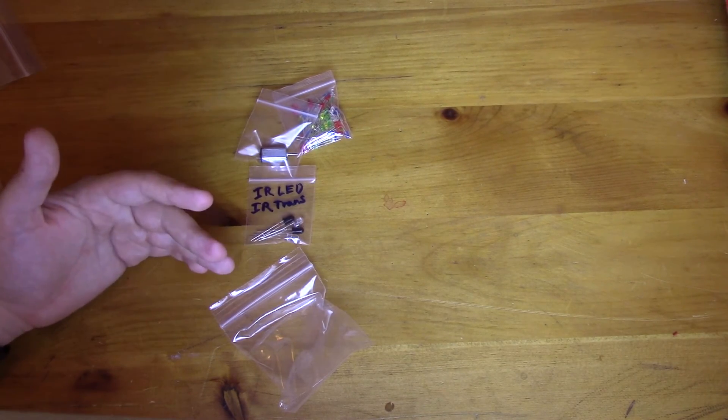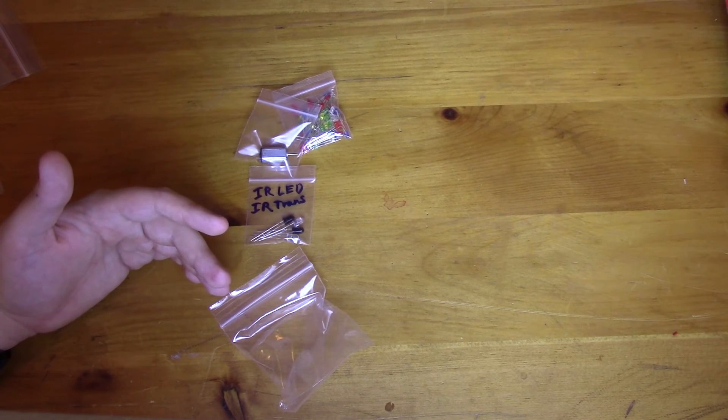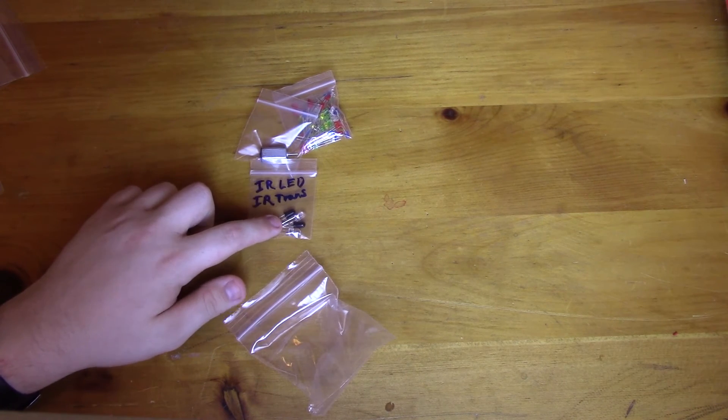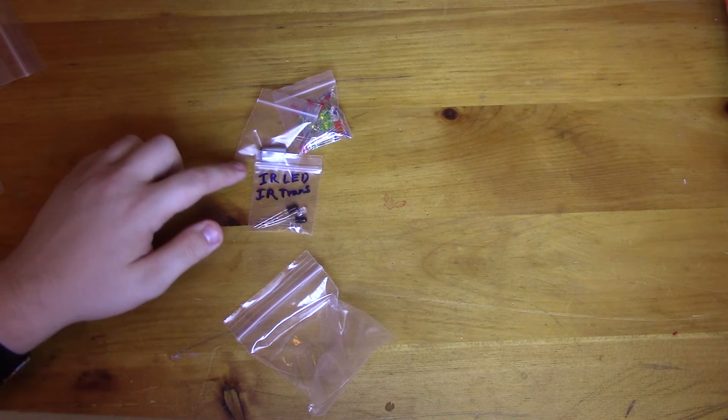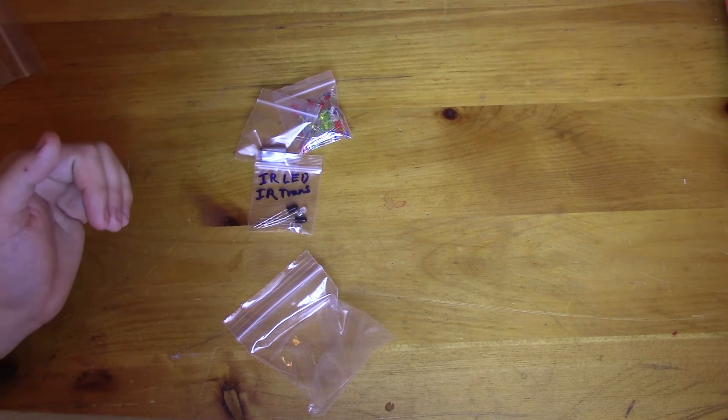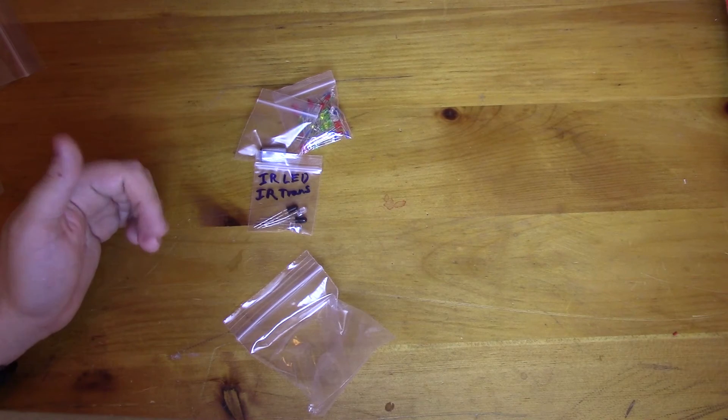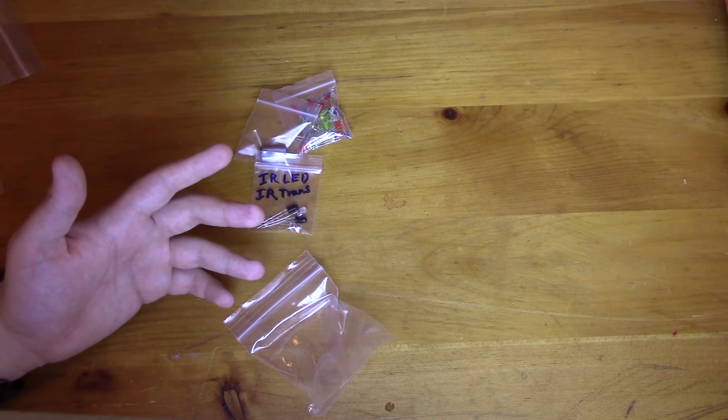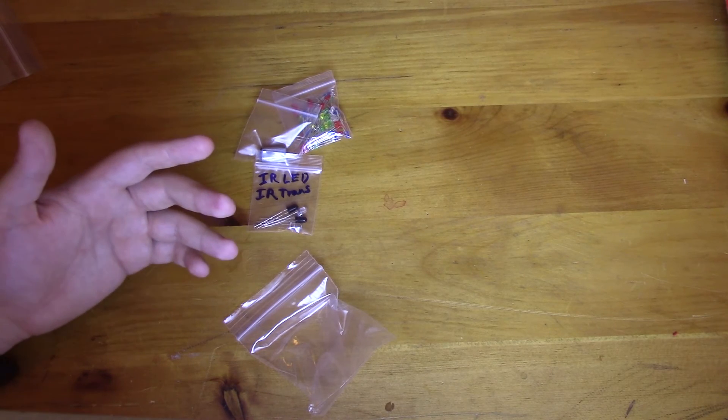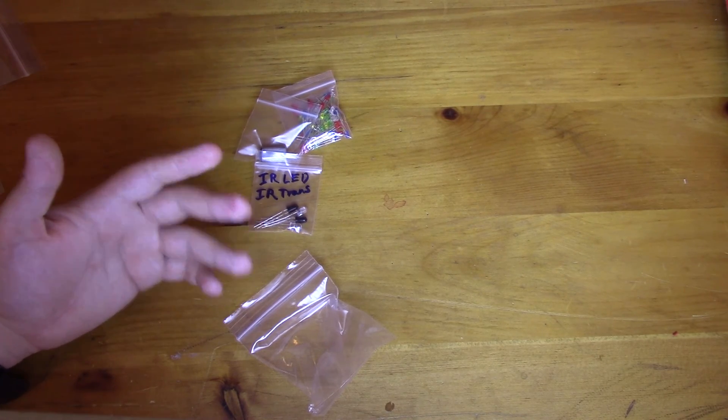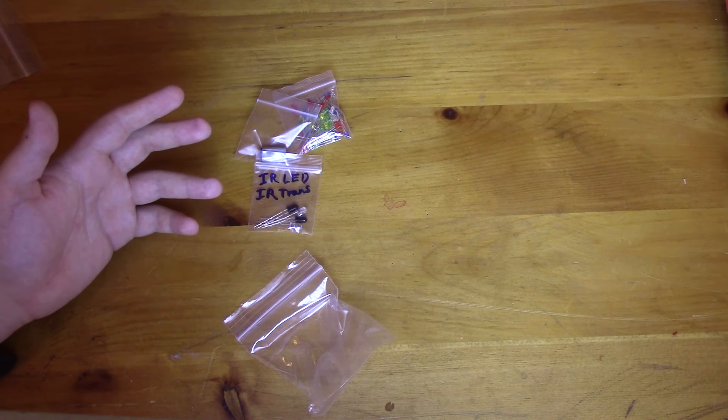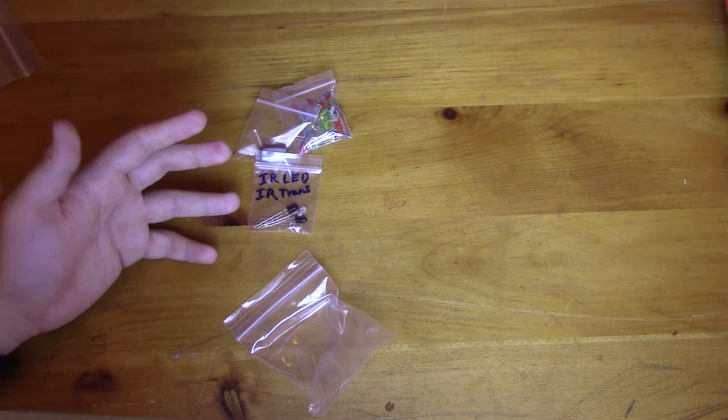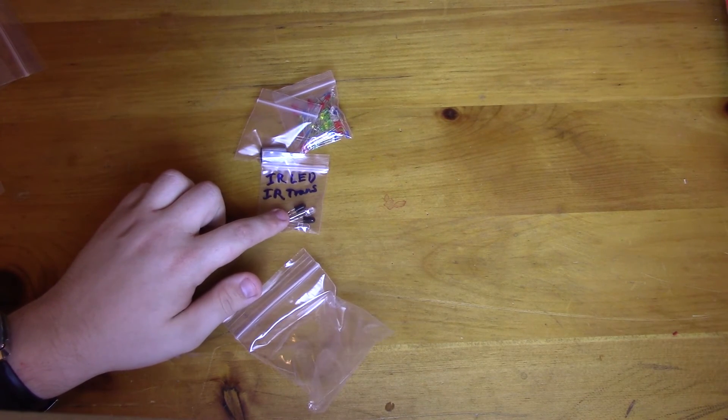Again, I haven't had a use for them yet, but I can definitely see myself using them at some point. You can also in a lot of cases use the infrared transistors for detecting just ambient light. That's not going to work amazingly if you're using all LED lights in your house. But sunlight puts off an incredible amount of infrared radiation. So these will detect it quite well.